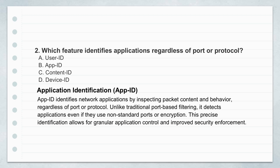Building on that, another feature is App ID — identifying apps no matter the port or protocol. App ID doesn't just trust the port number because apps can easily disguise themselves or use non-standard ports. Instead, it inspects the actual packet content and the application's behavior — sophisticated pattern analysis. This means you get really accurate application control. The key thing is App ID moves security from being reactive and port-based to being proactive and application-aware. You're securing what people are actually doing, which is vital for stopping sneaky threats or shadow IT.